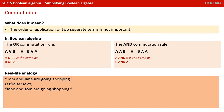Commutation: this rule states the order of application of two separate terms is not important, and again there's an OR and AND version. So in other words, A OR B is equivalent to B OR A, and in the same way, A AND B is the same as saying B AND A. A real life analogy would be: 'Tom and Jane are going shopping' is the same as saying 'Jane and Tom are going shopping.'